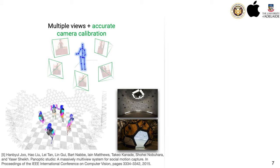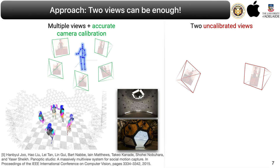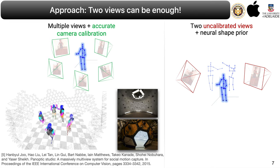Our approach, on the other hand, proposes that instead of more cameras, we should add a neural prior to constrain the shape — that is, the set of 3D points — so that the constrained 3D structure lies on a manifold. This approach allows us to combine multiple different instances or observations, even though the object is deforming, by leveraging only two or three physical views at any single instance.